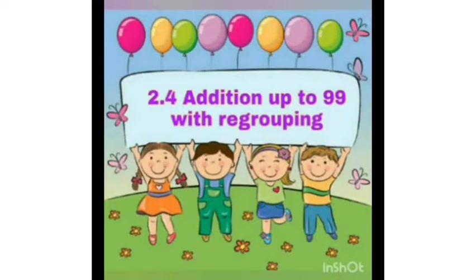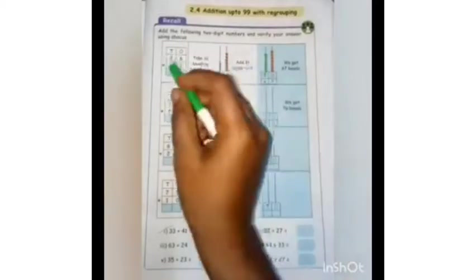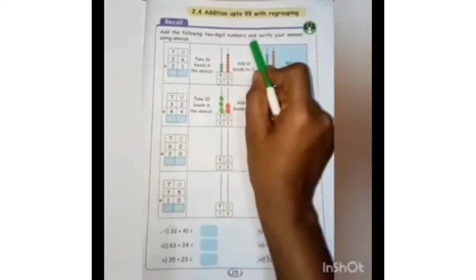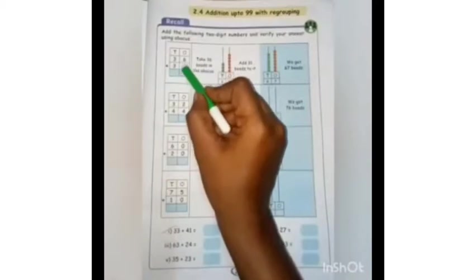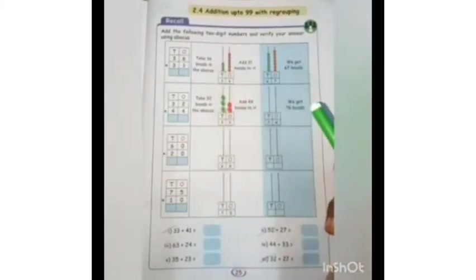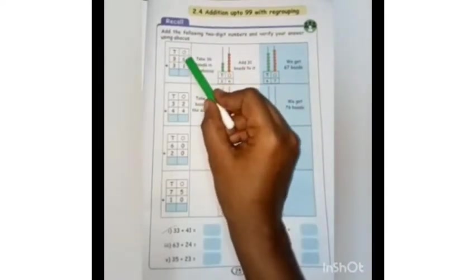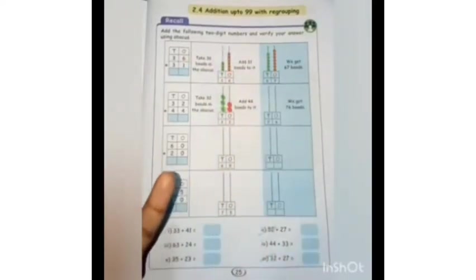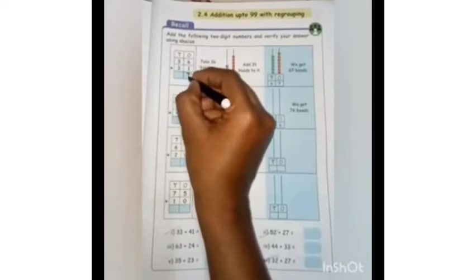I am going to recall some book exercise. Listen children. Then add the following two-digit numbers and verify your answer using Abacus. First you have to add, then check your answer using Abacus. Let us start. See here — first you have to take 6 in the mind and 1 in the finger. After 6, what number will come? 7. So you can write 7 here.